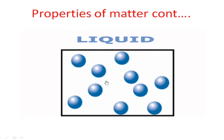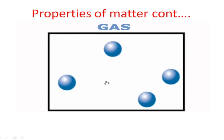The next state is liquid. The particles of liquid are not as closely packed together, and between one particle and the other there exists a large intermolecular space. This makes the force of attraction between the particles of liquids weak, hence the liquid takes the volume and shape of the container in which it is confined.